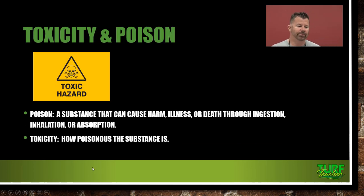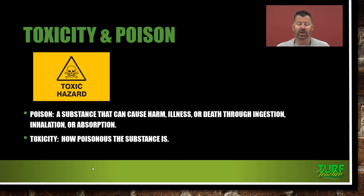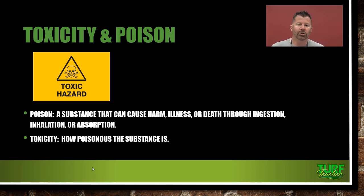So toxicity and poison. A poison is a substance that can cause harm, illness, or death through ingestion, inhalation, or absorption. We can get it in our mouth and swallow it so it's inside our body, breathe it in so it's inside our lungs, or get it on our skin and have it absorb into our body. Toxicity is how poisonous the substance is.